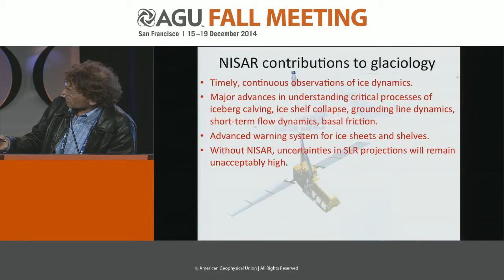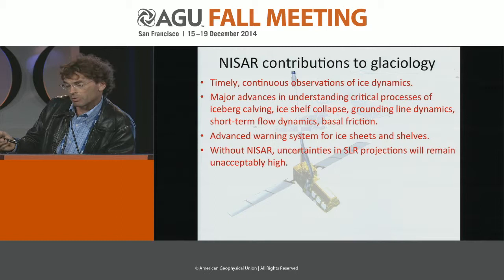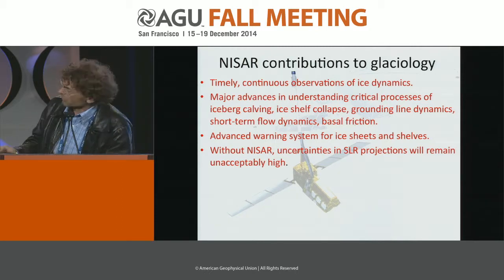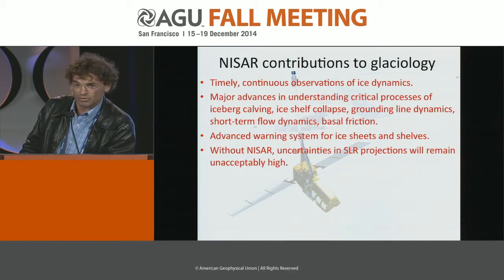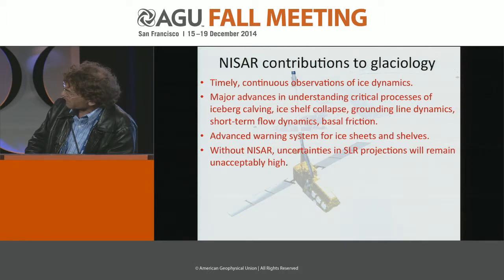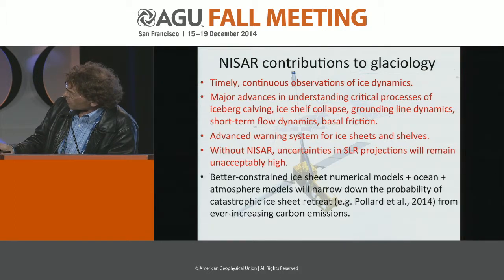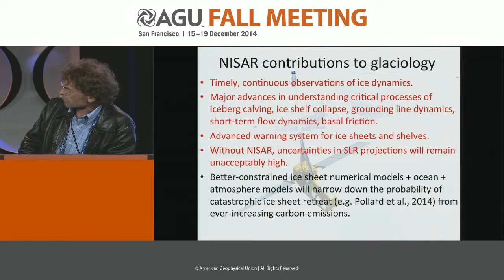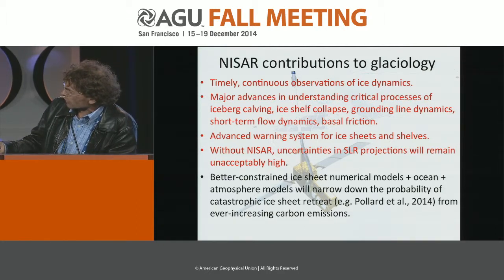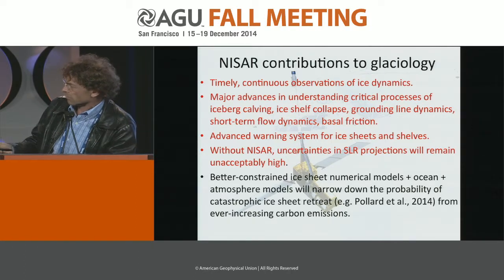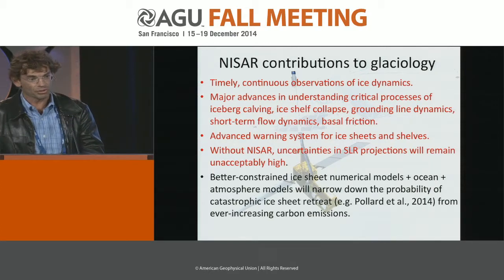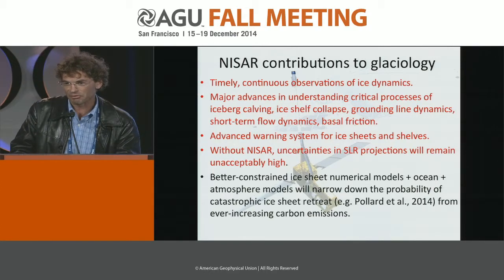We are often asked how much NISAR will help us reduce uncertainty in sea level projections. The counterargument is that if we don't have a mission like NISAR, we will not be able to reduce the uncertainties in sea level projections — they will remain unacceptably high. With better models coupled with the ocean and atmosphere, the large goal is to be able to narrow down the probability of catastrophic ice sheet retreat in some of these ice sheets from ever-increasing carbon emissions. Thank you very much.